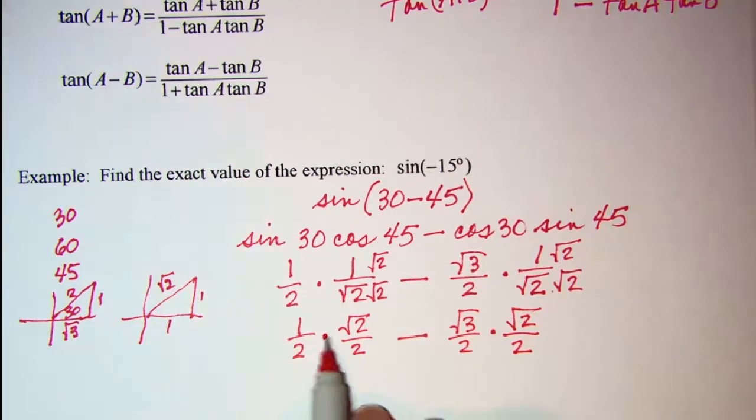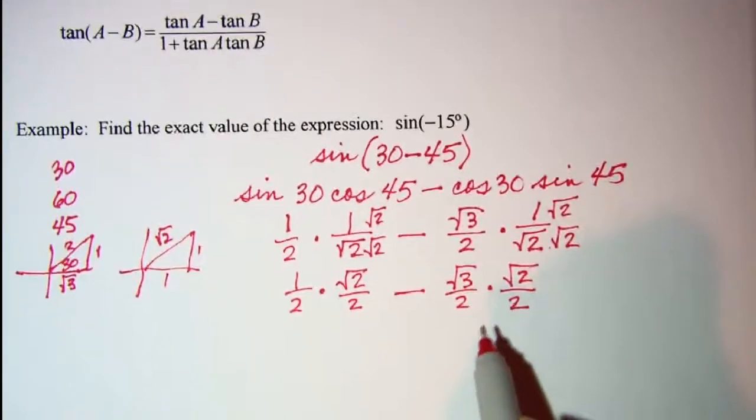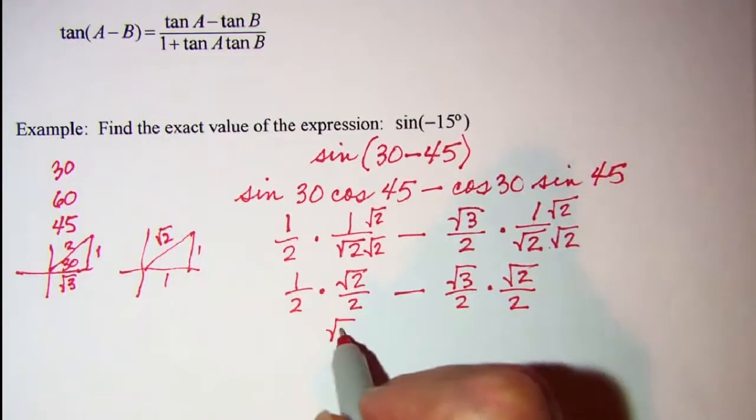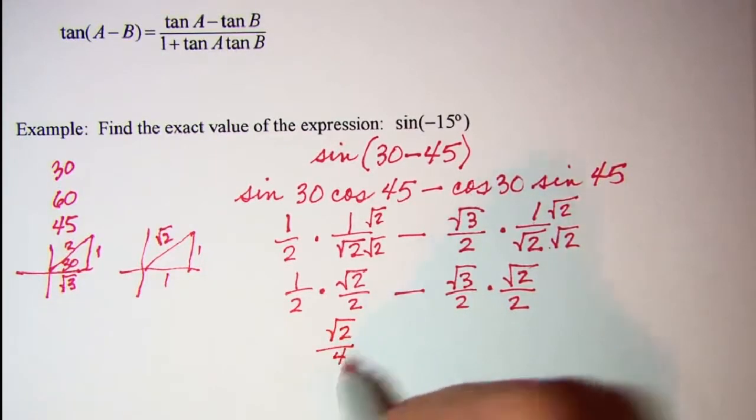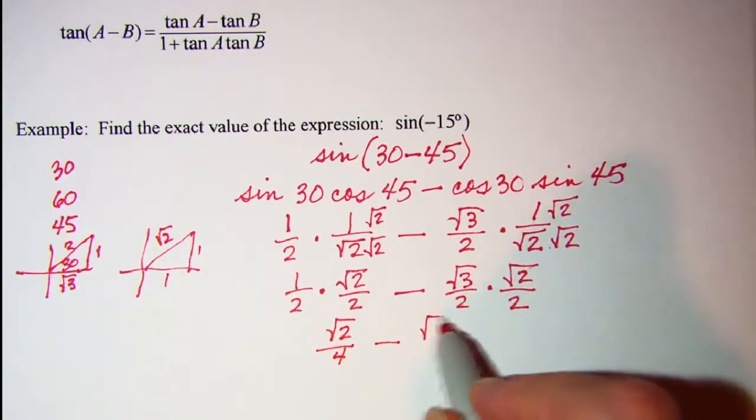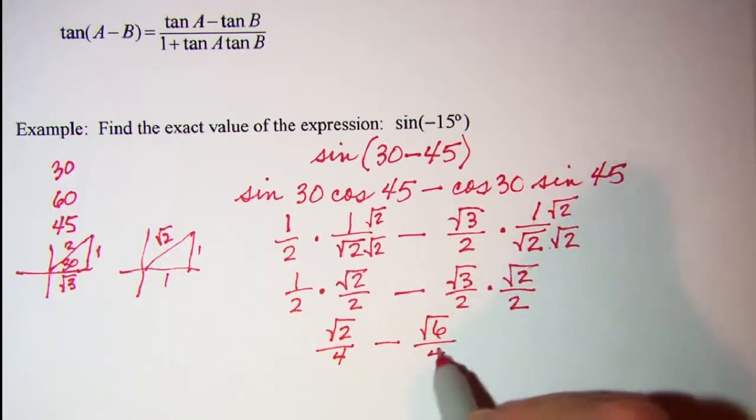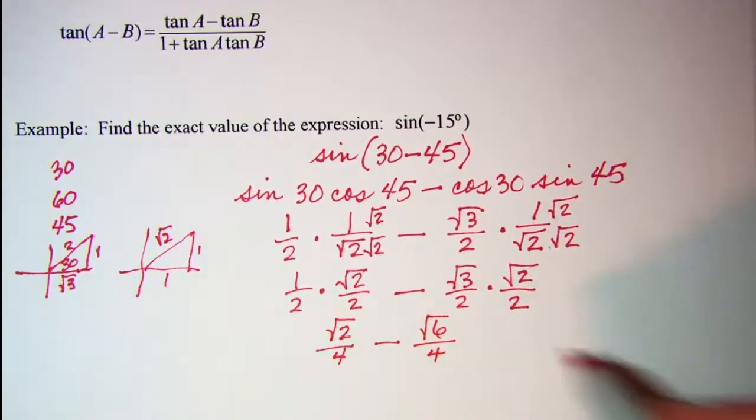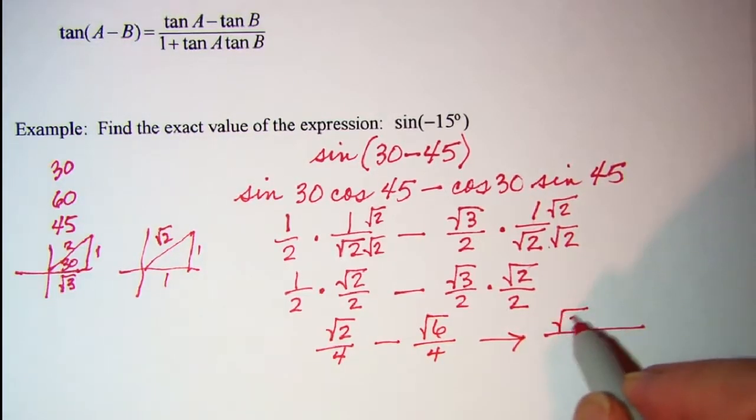This is root 2 over 4 minus root 6 over 4. And they have a common denominator, so I can put those two fractions together over that common denominator. And I just have root 2 subtract root 6 over 4.